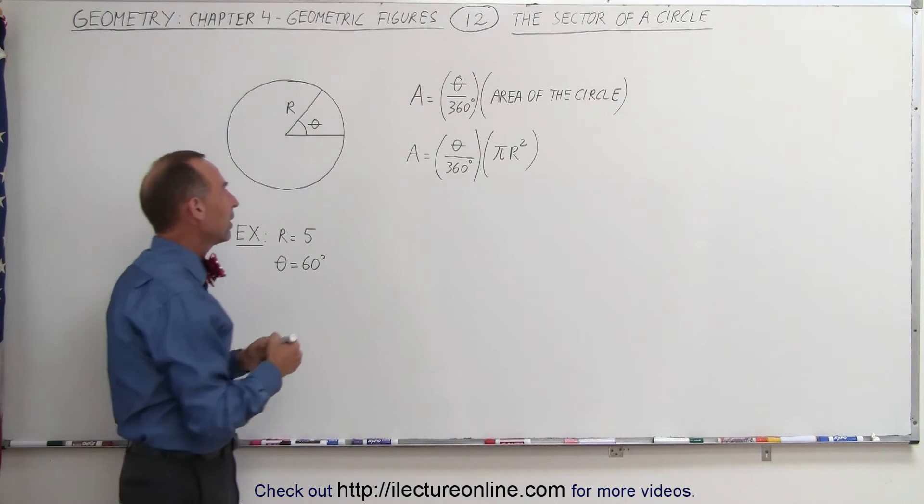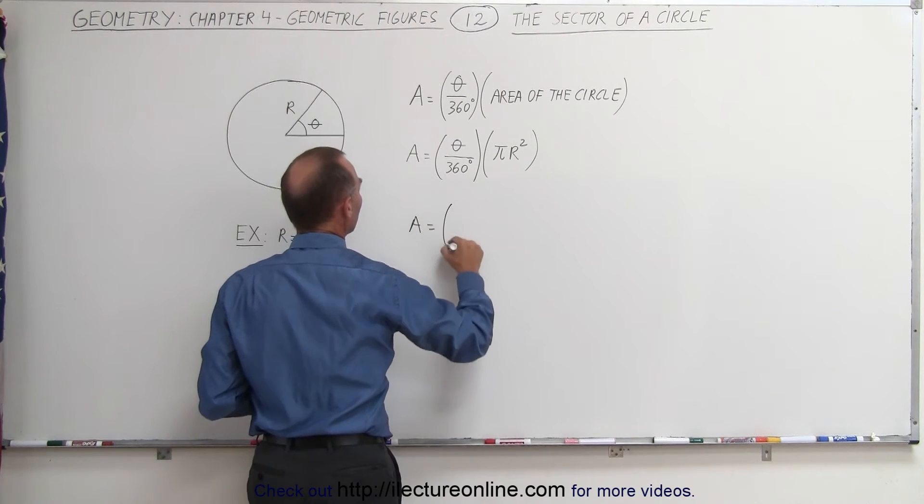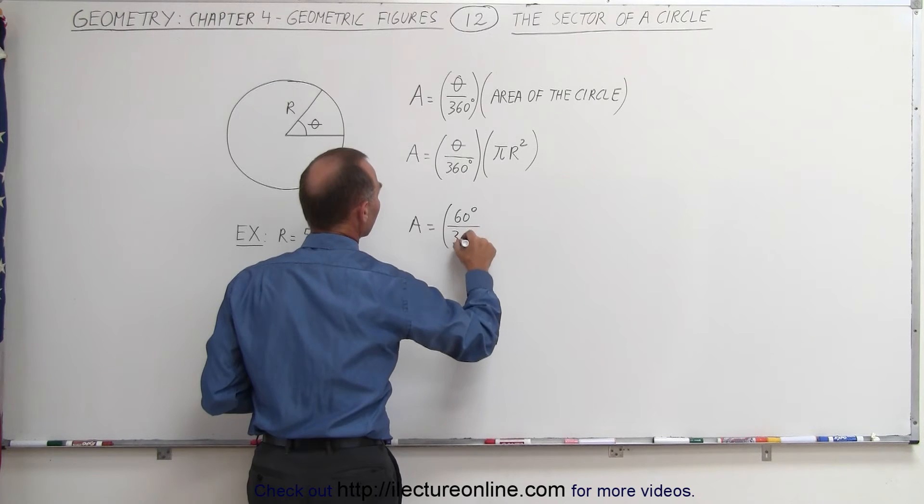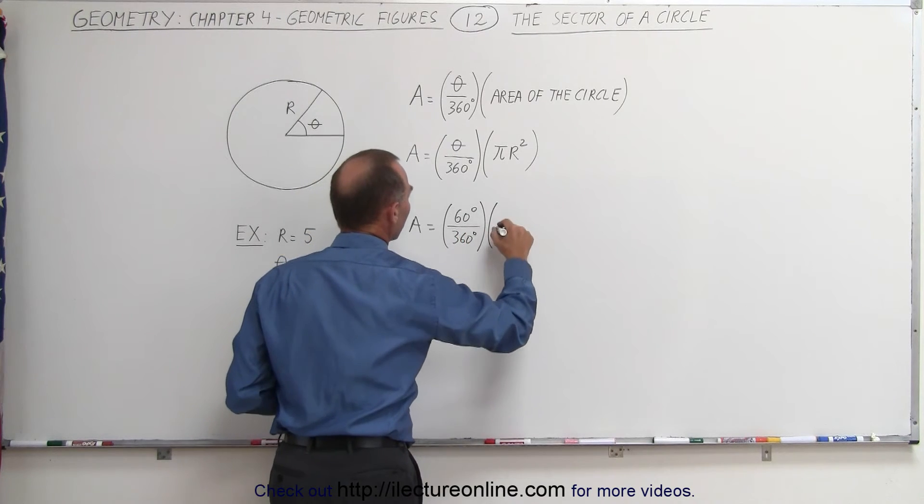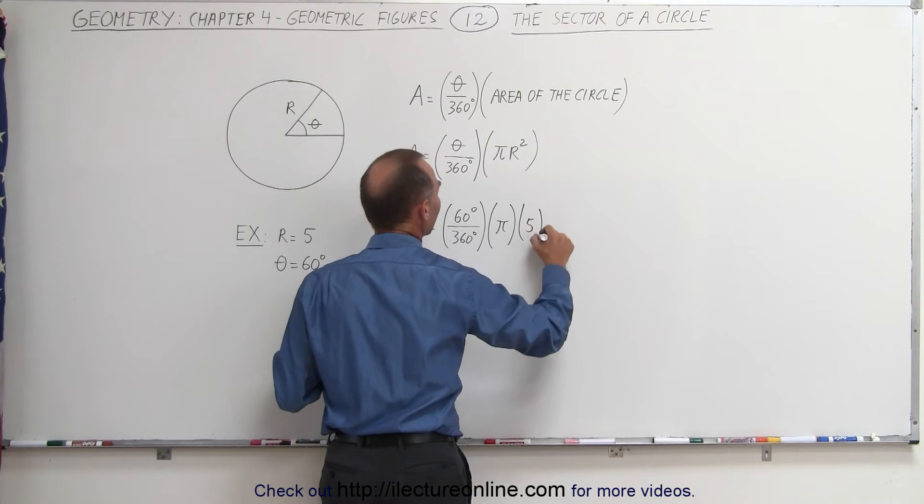Using the equation, we can say that the area is equal to, well we have a 60 degree angle, divide that by 360 degrees, and multiply that times π times r, which in this case is 5².